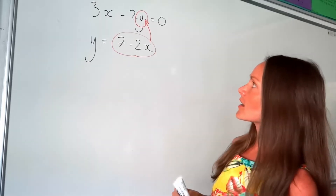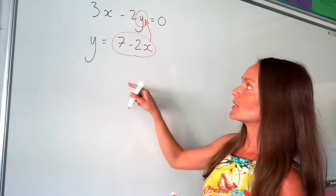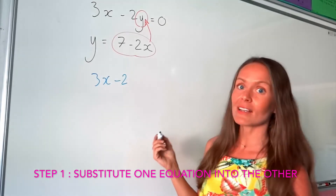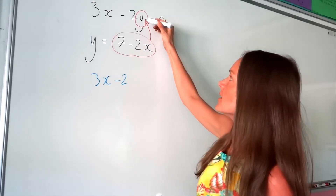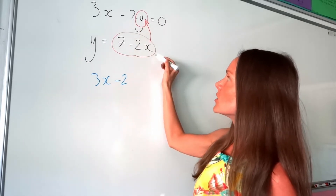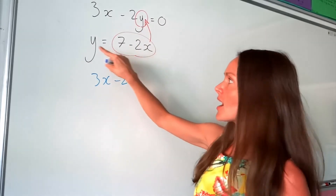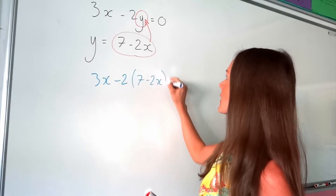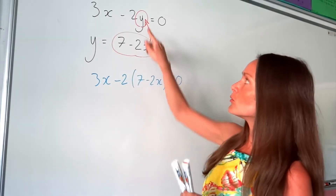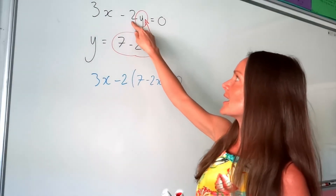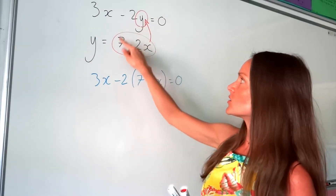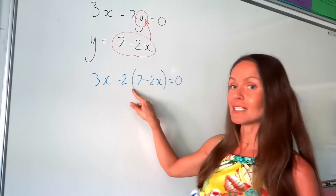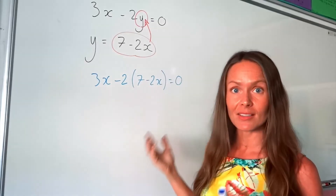So if I write that top equation again down here — so 3x minus 2 — except when I get to the letter y, I'm going to write this instead, because this is the same as the letter y. Just remember to put that in brackets, because you're multiplying the letter y by negative 2, and this is our letter y, so you have to remember you're multiplying all of this by negative 2, so make sure it goes inside brackets.